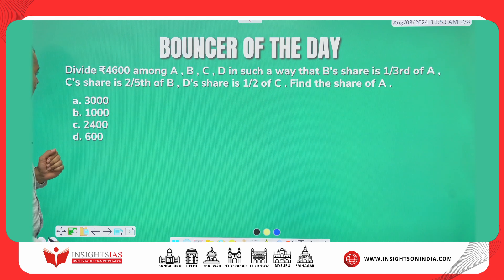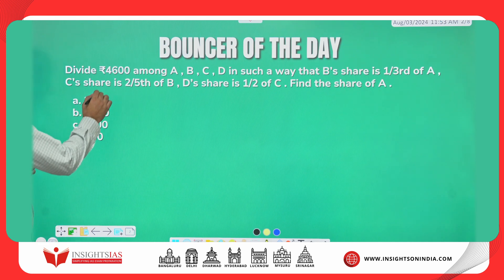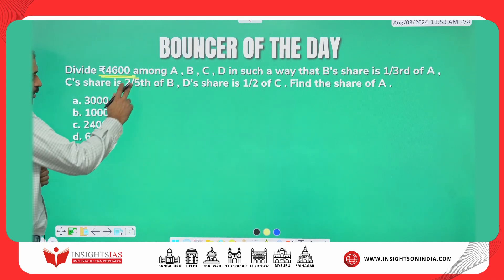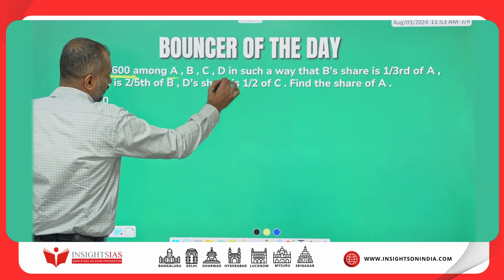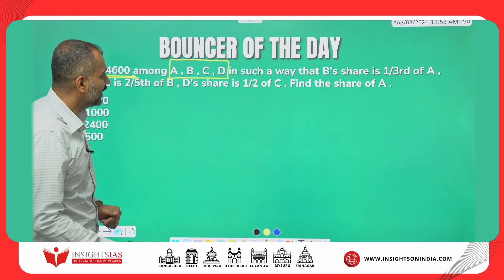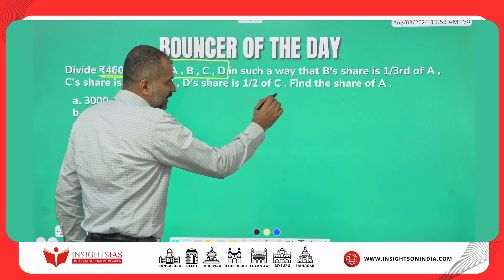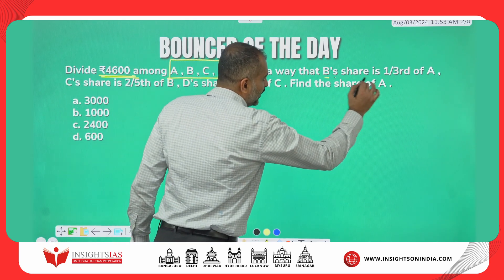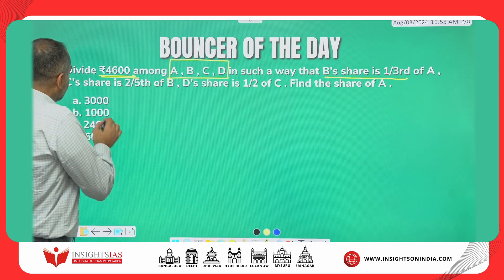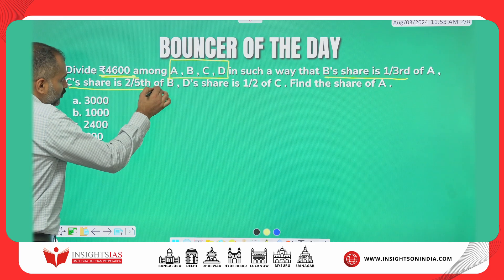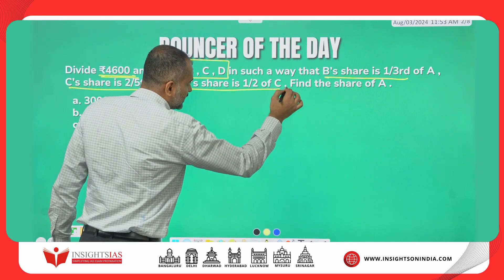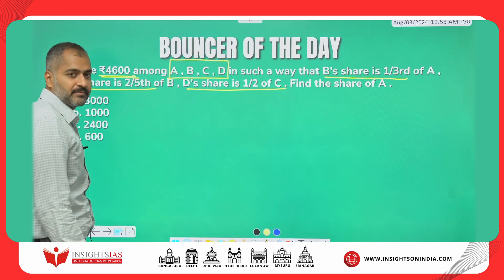Here it says you have to divide 4600 among A, B, C, D — four people. 4600 has to be divided in such a way that B's share is one third of A, C's share is two fifth of B, and D's share is half of C.